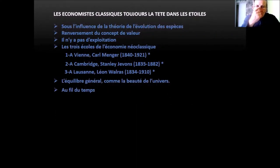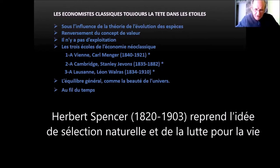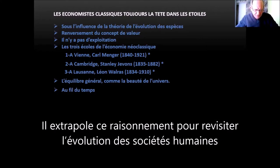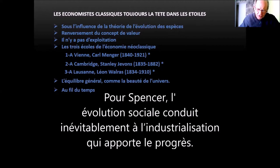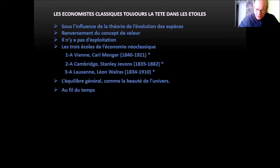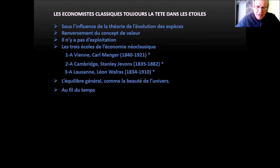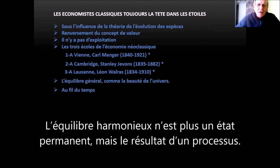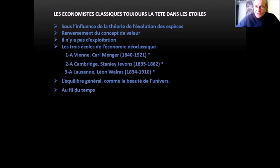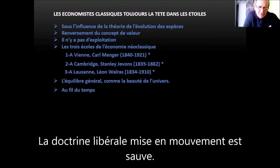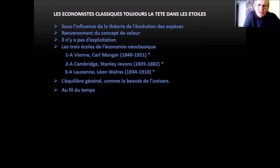Nous voici donc arrivés à un moment où il nous faut parler de la deuxième école libérale en économie classique, qu'on dénomme néoclassique. Herbert Spencer, 1820-1903, va mobiliser l'évolution des espèces et la sélection naturelle de la lutte pour la vie pour revisiter l'évolution des sociétés humaines. L'évolution sociale conduit inévitablement à l'industrialisation qui apporte le progrès. Chacun, en poursuivant ses intérêts personnels particuliers, contribue au mieux-être de tous. Il rejoint les présupposés de l'économie classique et rajoute que l'équilibre harmonieux est le résultat d'un processus — la doctrine libérale mise en mouvement.